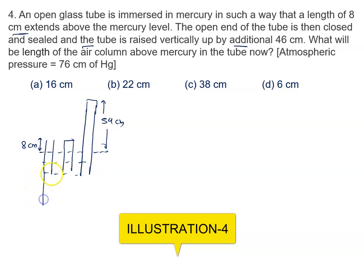Okay. Means this tube is long in size. So you are packing up. What will be the length of the air column above the mercury in the tube? You have to find the length of the air column above the mercury in the tube. Atmospheric pressure is given to us 76 cm of Hg.